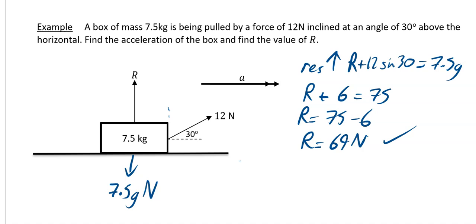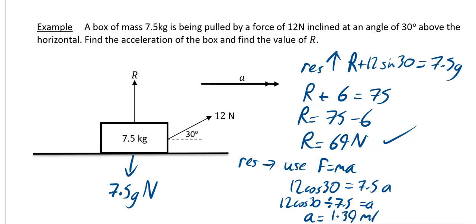To find the acceleration, I'm going to resolve horizontally. And I'm also going to use f equals ma. I didn't use f equals ma in the first when I resolved vertically. That was because there was no acceleration, no motion vertically. So it was just the forces up equal the forces down. But in this one, when we resolve horizontally, there is acceleration. So we have to use f equals ma. So the pulling force that's getting me going here is 12 cos 30. And that's equal to my mass, which is 7.5 times my a. 12 cos 30 divided by 7.5 to get your a. So a is equal to 1.39 metres per second squared to two decimal places.